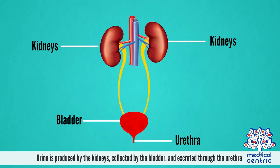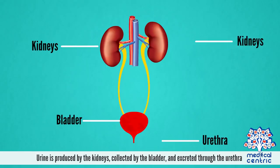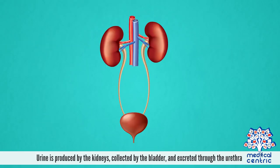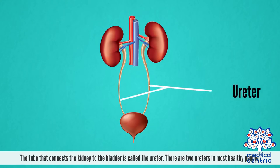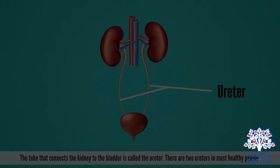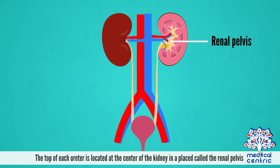Urine is produced by the kidneys, collected by the bladder, and excreted through the urethra. The tube that connects the kidney to the bladder is called the ureter. There are two ureters in most healthy people. The top of each ureter is located at the center of the kidney, in a place called the renal pelvis.